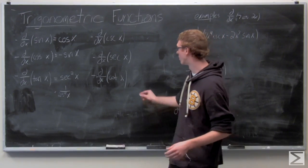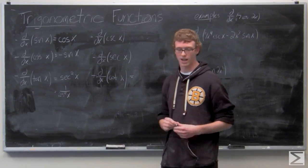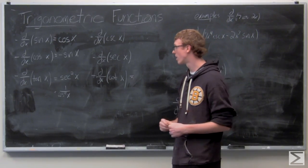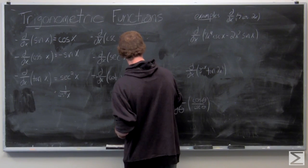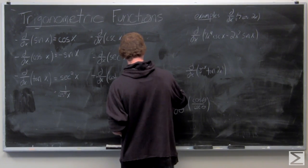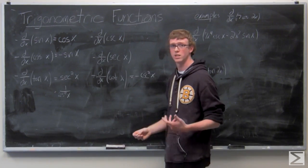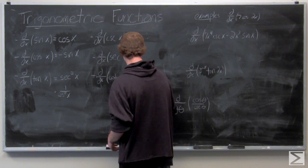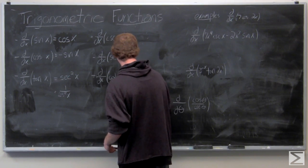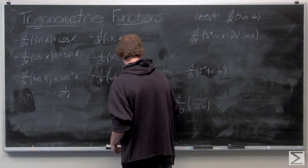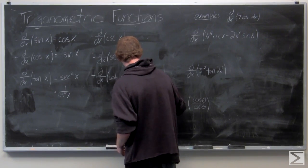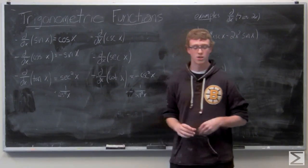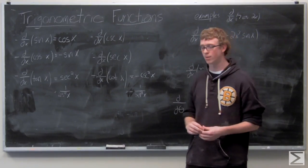Now we'll go over to cotangent, since we just took a look at tangent. The derivative of cotangent is negative cosecant squared of X, which is also negative one over sine squared of X.